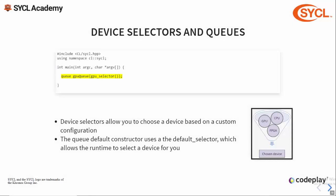Now that we've included the header file, the first thing we need to do is create a queue to enqueue work to. One of the simplest ways to do this is to construct a queue object, initializing it with a device selector. A device selector is a function object which describes a heuristic for scoring devices. When you pass a device selector to the queue constructor, it will look at all the devices available in the system, score them all according to this heuristic, and choose the one with the highest score. In this case we're using the GPU selector, one of the standard selectors provided with the SYCL API, which will only choose GPU devices. You can also construct a default queue which will use the default selector — another standard selector whose heuristic is implementation defined.